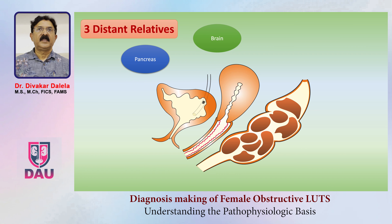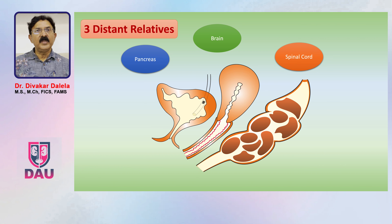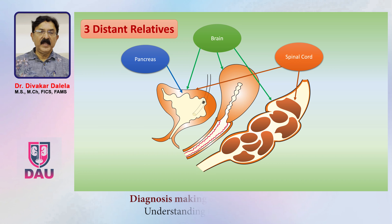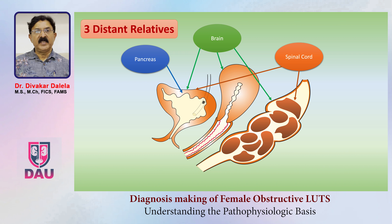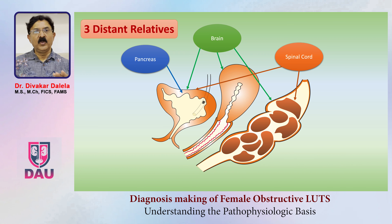You should also remember three distant relatives of the urinary bladder: the pancreas, the brain, and the spinal cord. The pancreas can influence the bladder through diabetes. The spinal cord can influence the functioning of the bladder as well as the rectum. The brain can influence the functioning of the bladder, uterus, and rectum. These three distant relatives can present as lower urinary tract symptoms.